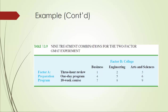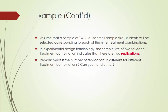This table summarizes the nine treatment combinations for the two-factor GMAT experiment. For convenience, let's call the combination of factor A three-hour review and factor B College of Engineering treatment number two, and so on. We're going to assume that a sample of two students will be selected corresponding to each of the nine treatment combinations. This is a very small sample size, but for the sake of convenience, we use it to make our demonstration clearer.